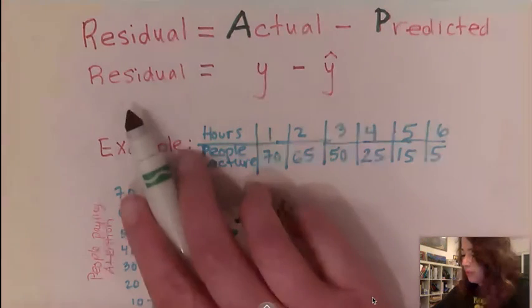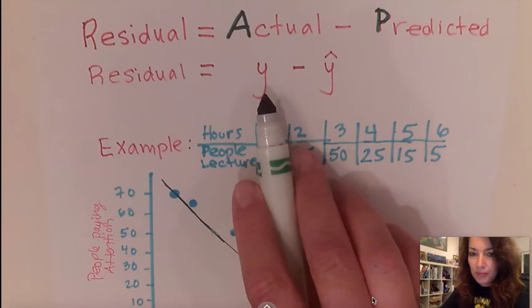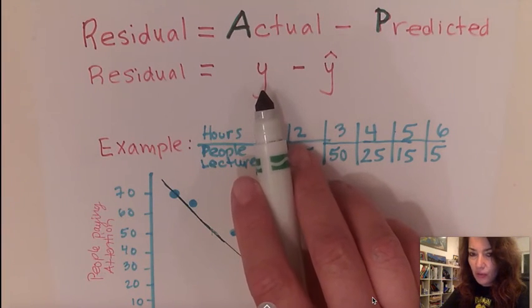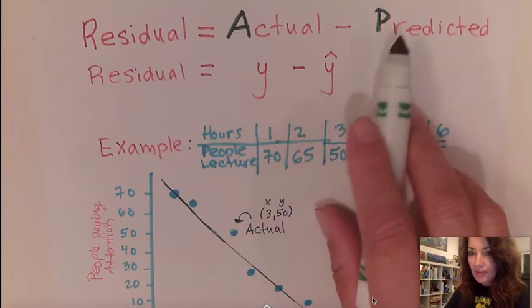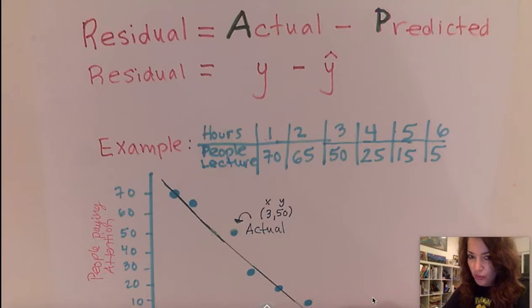So for example, for this residual in words, if I write it in symbols, the actual represents the Y value of your ordered pair and the predicted represents the Y hat value of your ordered pair.